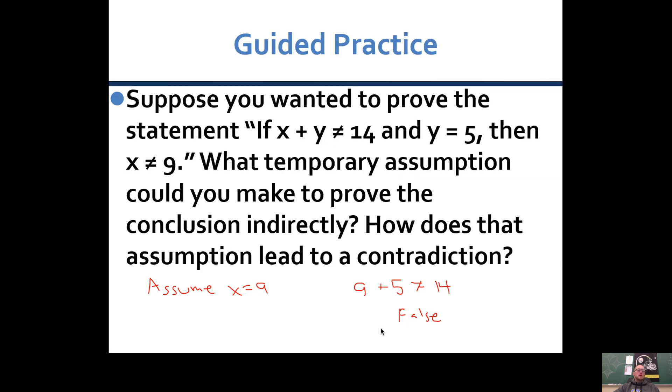So assuming that x equals 9 leads to a false statement here when you know this has to be true, but we just showed it's false. That's a contradiction. When you have a contradiction, what that means is what you assumed was not true. So if this was not true, then x does not equal 9. So we just indirectly showed that x doesn't equal 9.